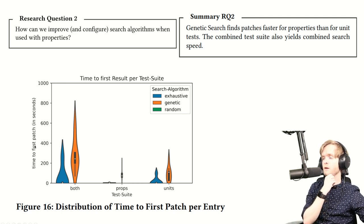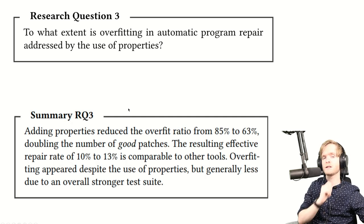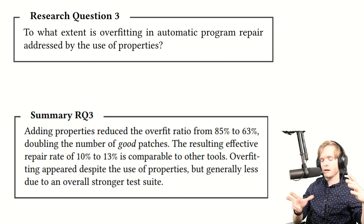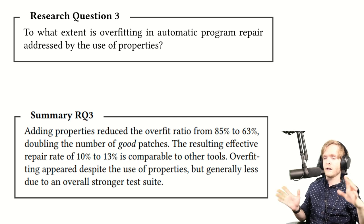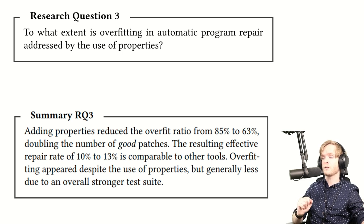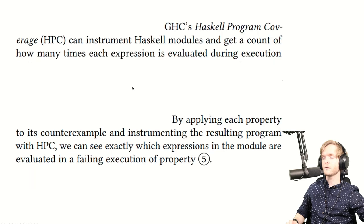Looking at speed: a graph shows the time to first result. The genetic search using properties was very fast at finding something that worked. For the overfitting question, Leonard and I generated a bunch of fits, then each independently labeled the patches as overfits or good fits. We found that adding properties did reduce the overfit ratio, which was quite nice. That was essentially the PROPER paper.